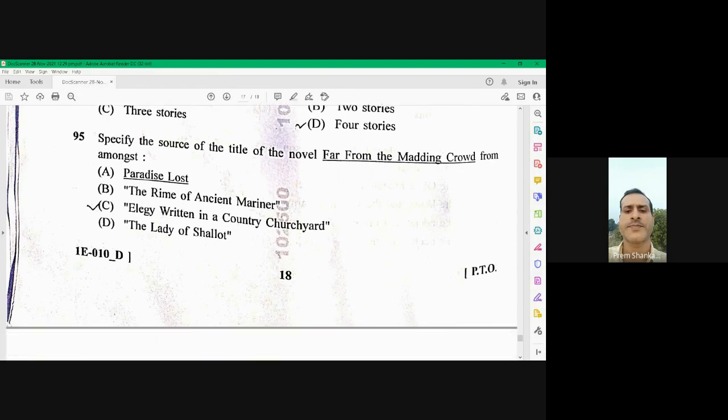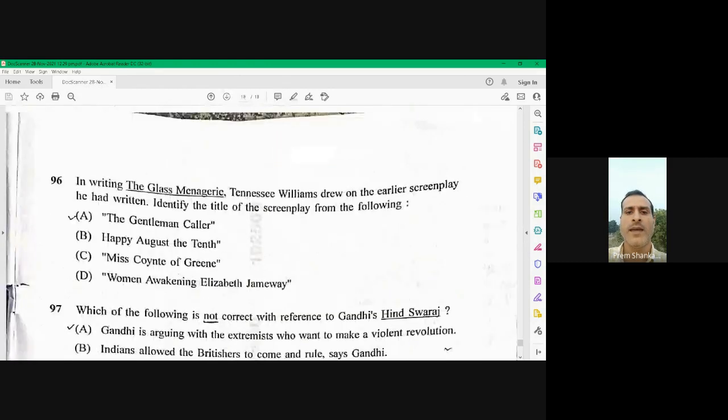Question number 96. In writing The Glass Managery, Tennessee Williams drew on the earliest screenplay he had written. Identify the title of the screenplay from the following. He has written the screenplay, The Gentleman Caller and the same theme has been used by him in writing the novel, The Glass Managery. So The Gentleman Caller, option A is the right option.